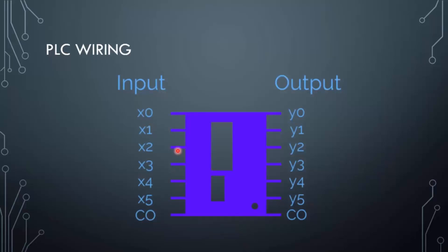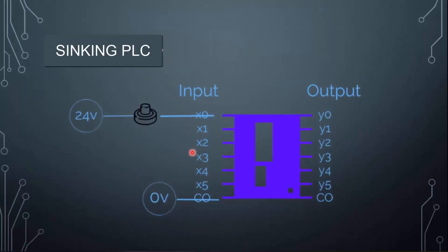So first let's see the input wiring for the PLC. There are two types of input wiring. The first is when the PLC is sinking: 24 volts is connected with one of the inputs and the common is connected with zero volts. The PLC is said to be sinking because the current flows into the input. The push button is said to be a sourcing switch because it is sourcing the PLC.